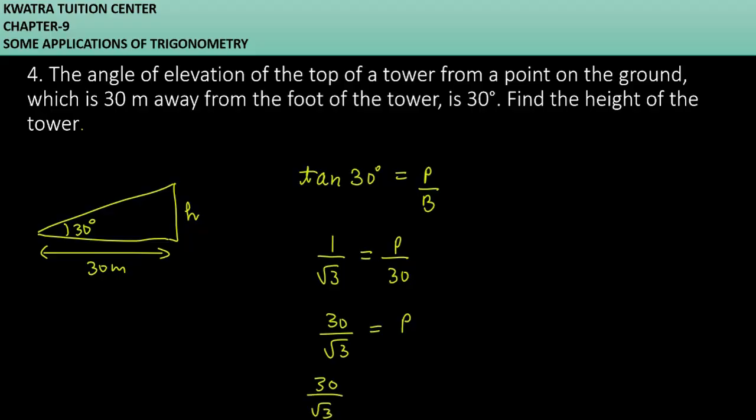30 over root 3, you have to multiply and divide it by root 3. So what will you do? 30 root 3 divided by 3. 30 from 30 cancel, you will get 10. So you will get the value as 10 under root 3 meter.